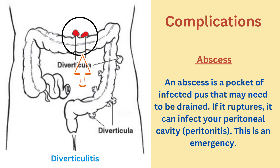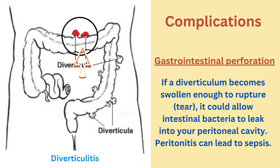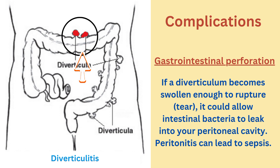An abscess — a pocket of infected pus — may need to be drained. If it ruptures, it can infect your peritoneal cavity, called peritonitis, which is a medical emergency. Additionally, gastrointestinal perforation can occur if a diverticulum becomes swollen enough to rupture, allowing intestinal bacteria to leak into your peritoneal cavity and potentially lead to sepsis.